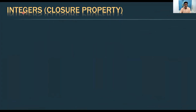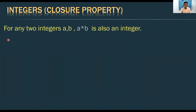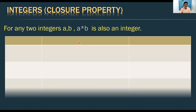Now we will observe the same closure property for integers. For any two integers A and B, if A ★ B is also an integer, then the closure property is satisfied. Let us observe with a table of operations, examples, and remarks.